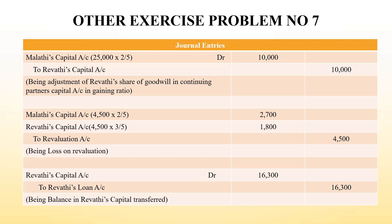So their capital values will be less by those amounts. And next, Revathi's capital account is transferred to Revathi's loan account. So Revathi's capital at the end is 29,200. This is calculated through the revaluation and capital account workout. The capital value has now become a loan to the business - Revathi's capital becomes Revathi's loan. So we credit Revathi's loan account with that value.